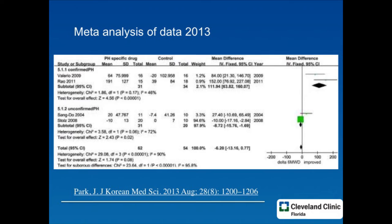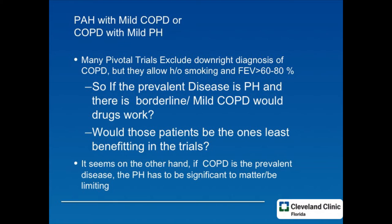Anybody who does any trial in PH that thinks they're treating PH and doesn't do right heart cath will be punished. So, how about COPD with mild PH? The experts and center directors believe they can classify patients with PH as group 1 PAH and still let them have COPD. Many trials allowed patients with FEV1s between 60 and 80 who had a history of smoking, but nobody actually gave them a diagnosis of COPD. We implicitly agreed that patients have mild COPD and they could still be called group 1.